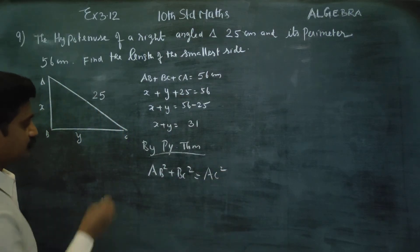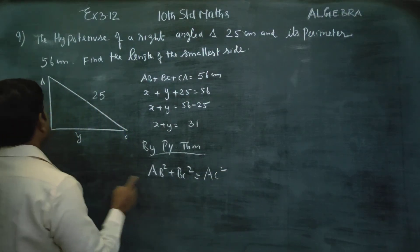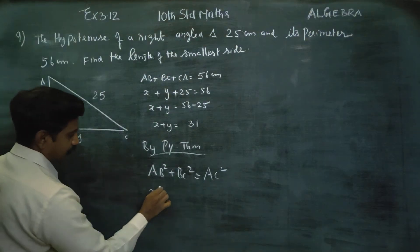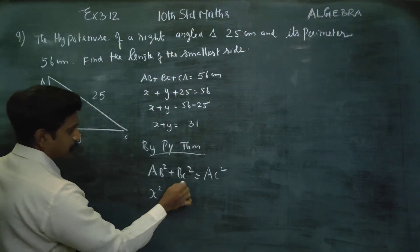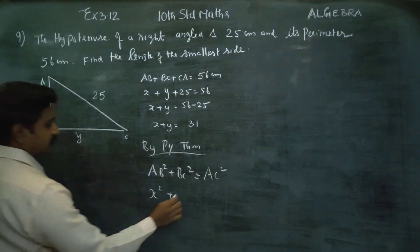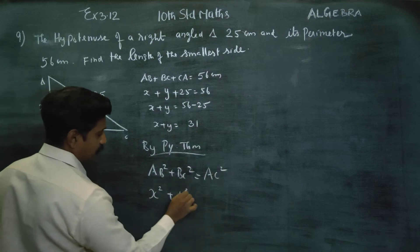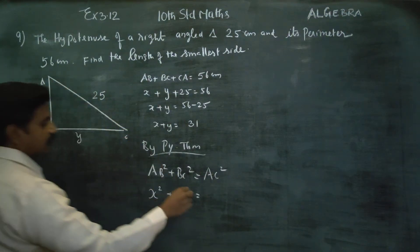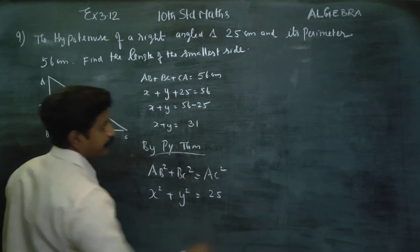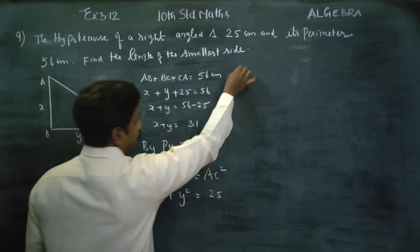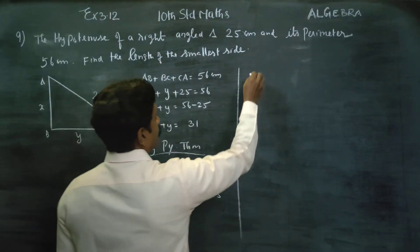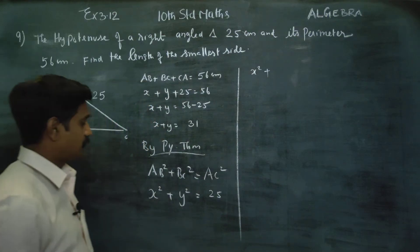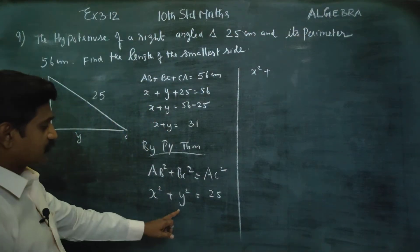This is the way to apply the Pythagorean theorem. x² plus y² equals AC², and AC equals 25, so x² plus y² equals 25².